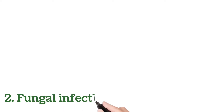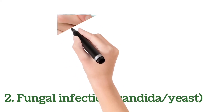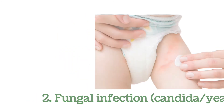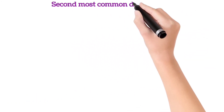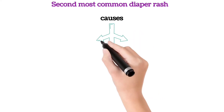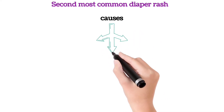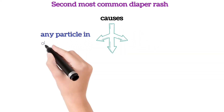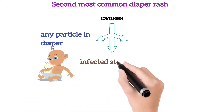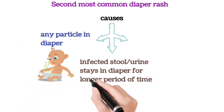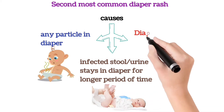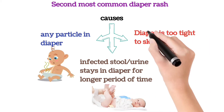Fungal infection — candida yeast — is the second most common diaper rash. Causes include any irritant particle in the diaper, infected stool or urine staying in the diaper for a longer period of time, or the diaper being too tight to the skin.